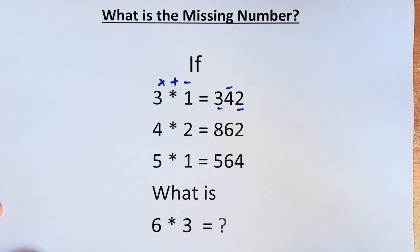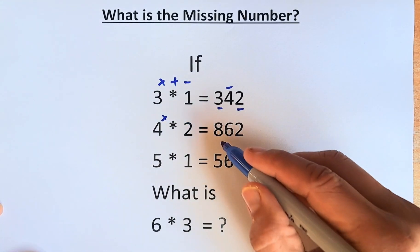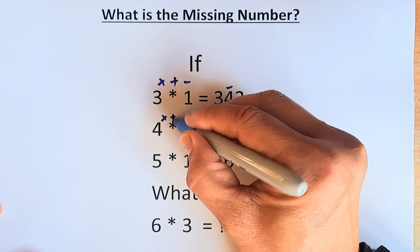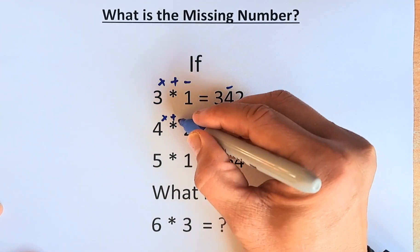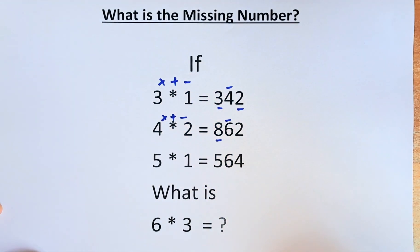So similarly, for the second row, 4 multiplied by 2 will give us 8, 4 plus 2 will give us 6, and then 4 minus 2 will give us 2.